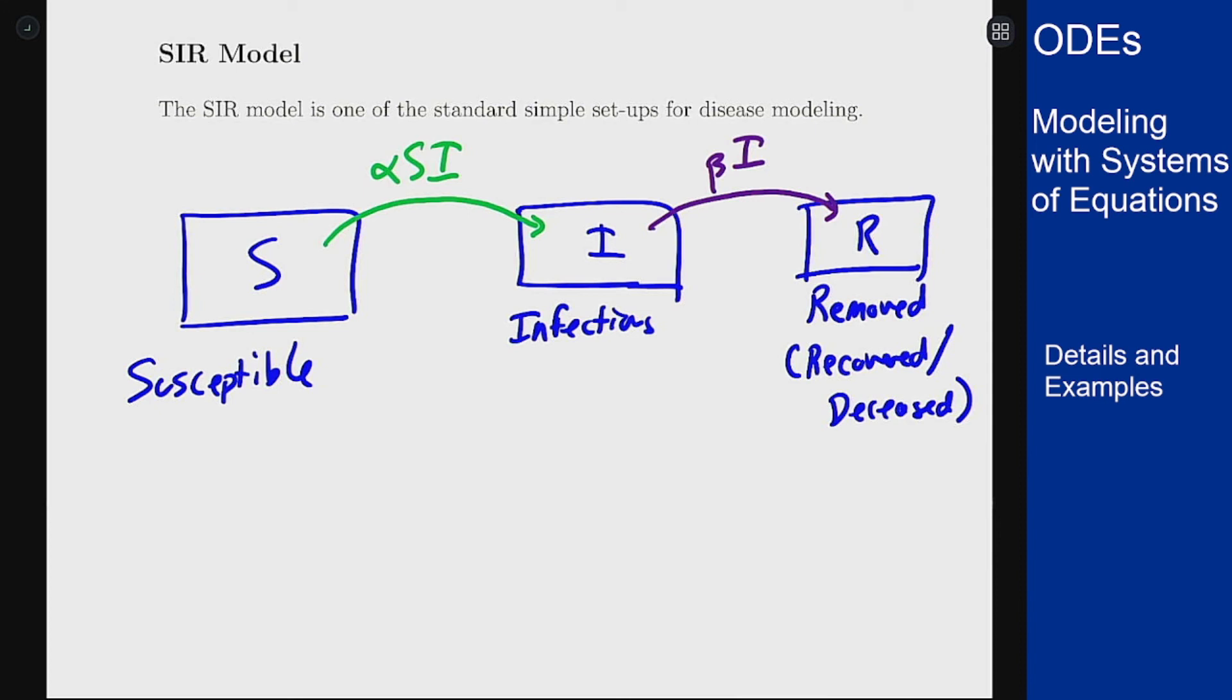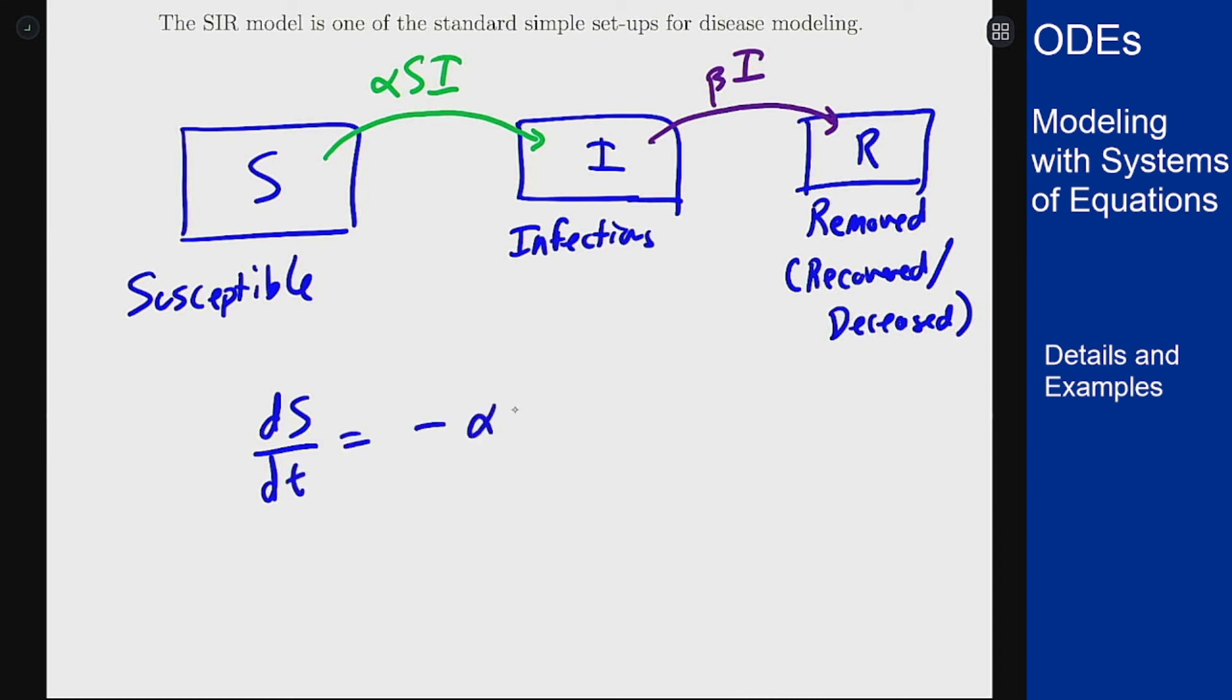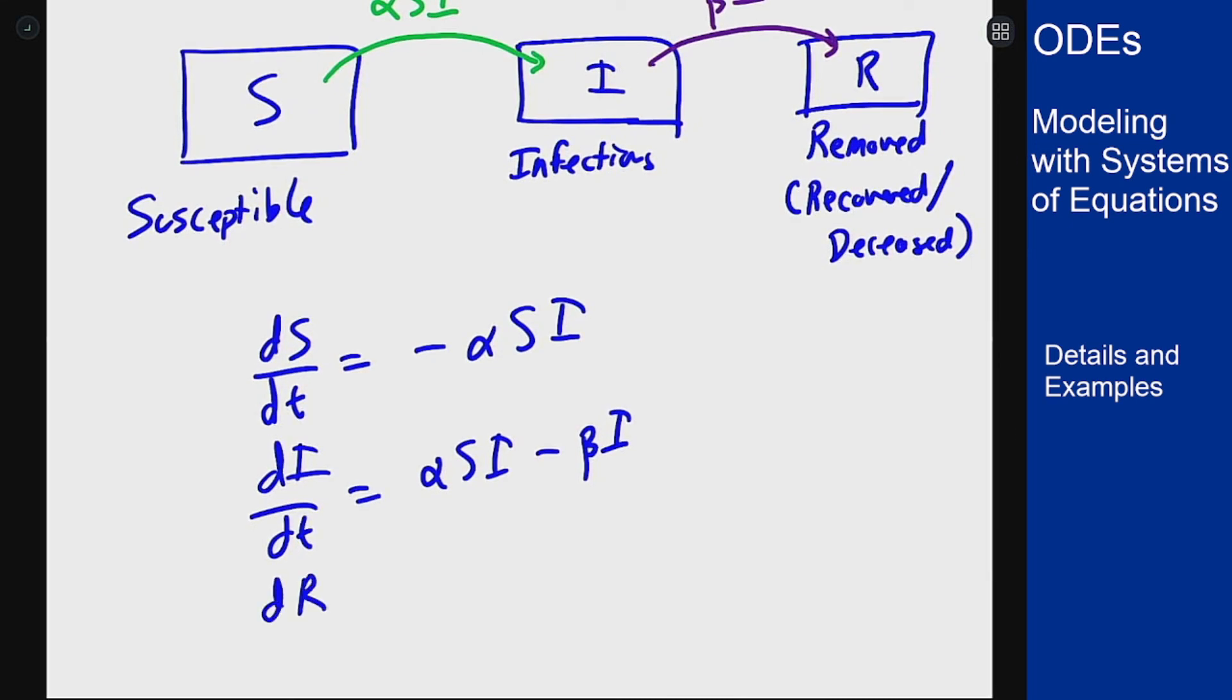So this gives us an easy way to write a system of equations that model this setup. For instance, dS/dt equals negative alpha S I. dI/dt is alpha S I minus beta I, and dR/dt changes just at plus beta I. Now this is the simplest version of what this might look like. The assumptions here are basically that a person is susceptible, they can get the disease at most once. Once they get it they recover and they can never get it again. That's the general idea of what this system says here.